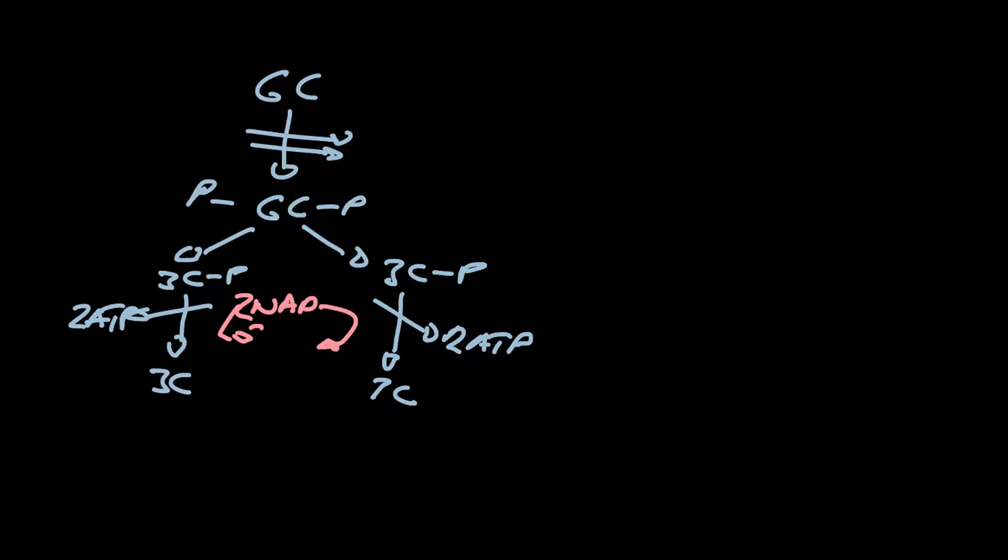The reduced NADs then go off to the electron transport chain on the inner mitochondrial membrane. So the glycerol, the three carbon glycerol gets turned into triose phosphate, and then that powers the rest of respiration.